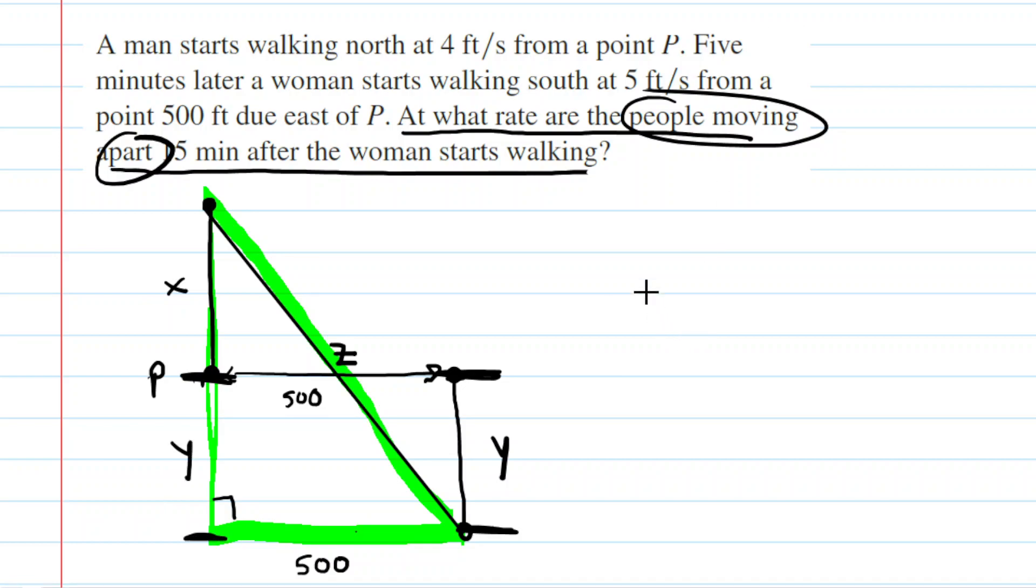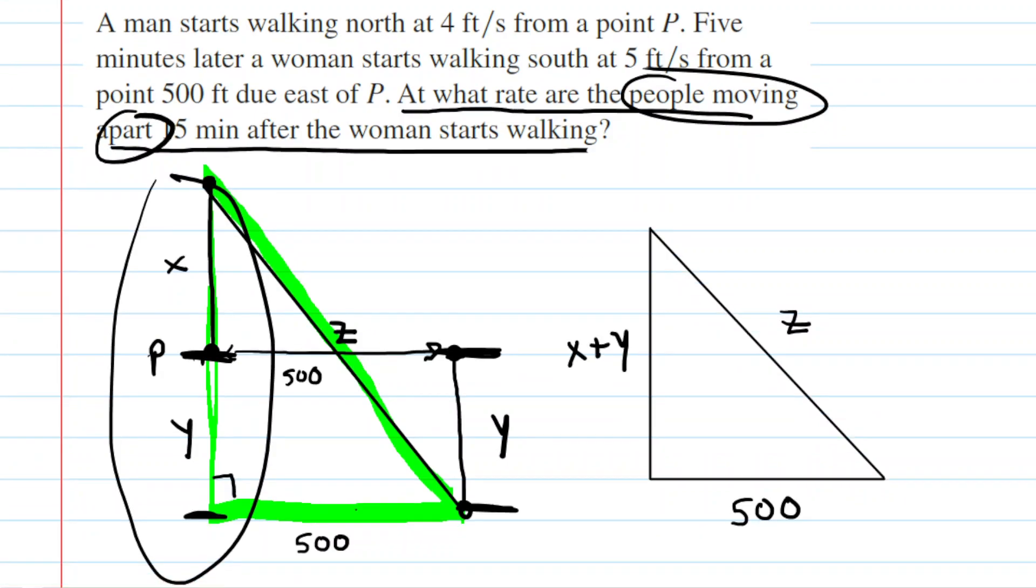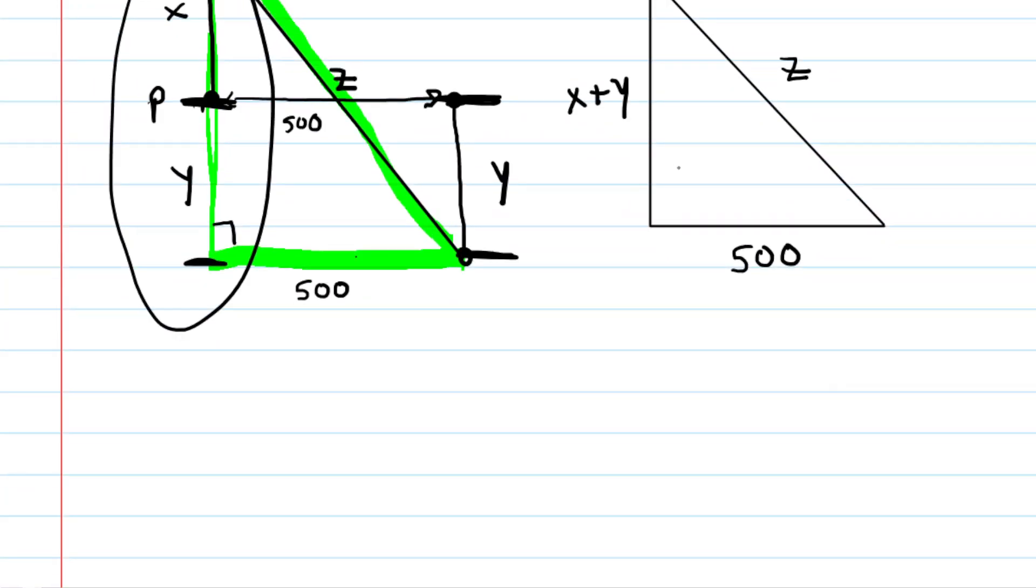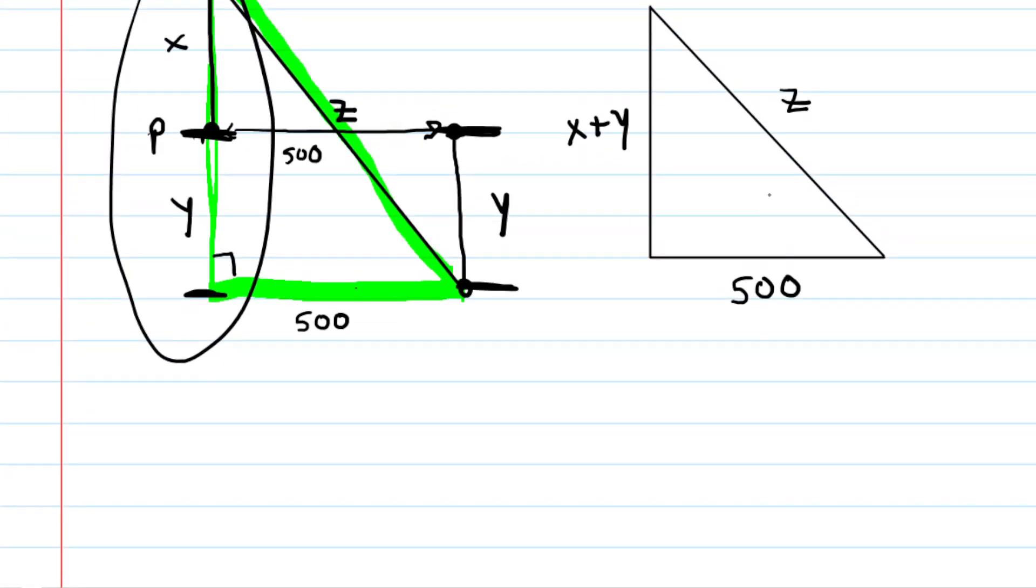Perhaps it's helpful if we redraw the right triangle on the side. And again, the base of the right triangle is 500. The hypotenuse is going to be Z, and then the other leg of the triangle, look back at this picture, you can see that that leg is going to be X plus Y. Very good. Now, because it's a right triangle, we know that we could apply the Pythagorean theorem to relate X plus Y, 500, and Z.